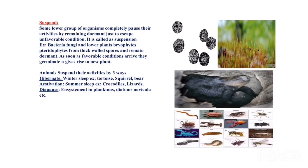Animals also suspend their activities through hibernation and estivation. Hibernation is winter sleep — organisms cannot tolerate the cold winter season, so they occupy a warmer region, store food, and remain dormant. Estivation is summer sleep — organisms cannot tolerate high temperatures, so they occupy a cooler area, store food, and remain dormant there.